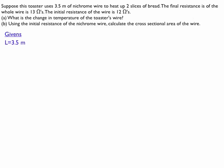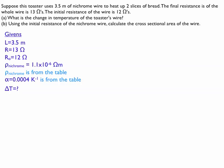Let's start by listing our givens. So I've got the length of the wire, the final resistance, the initial resistance, the resistivity of the nichrome which is from the table on the page, and the temperature coefficient which is also from the table on the page. And I'm looking for the change in temperature.